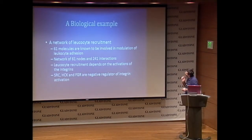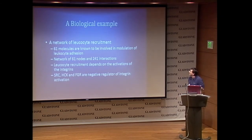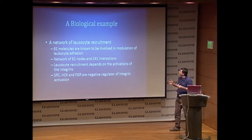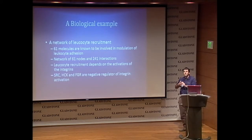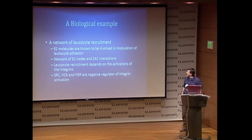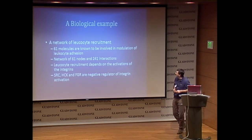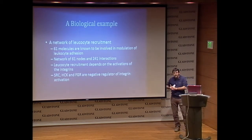Just as an example: a network of leukocyte recruitment. Leukocyte recruitment is a process that happens when leukocytes see an infection, and they stop and attach to the blood vessel to fight against the infection. It is known that there are 61 proteins involved in regulating this process. We reconstructed a network of 61 nodes and 241 interactions. We know that this process depends on the activation of proteins called integrins, and these three proteins are negative regulators of integrin activation — meaning if, for example, SARC is activated, the process is inhibited.